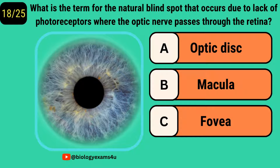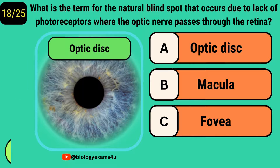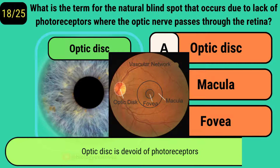What is the term for the natural blind spot that occurs due to lack of photoreceptors where the optic nerve passes through the retina? It is called the optic disc. It is devoid of photoreceptors.